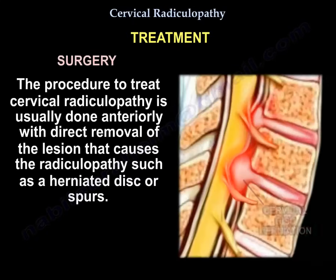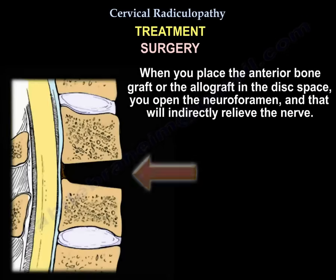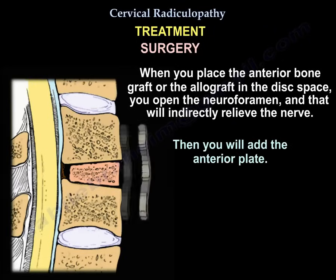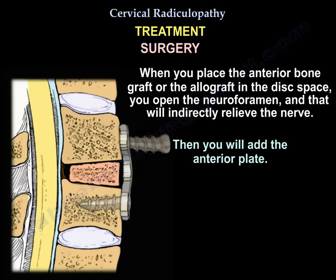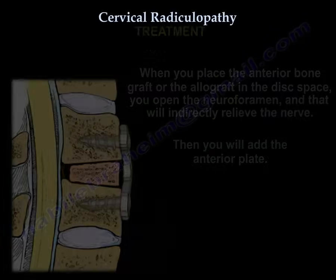The procedure to treat cervical radiculopathy is usually done anteriorly, with direct removal of the lesion causing the radiculopathy, such as a herniated disc or osteophytes. When you place an anterior bone graft or allograft in the disc space, you open the neuroforamen and indirectly relieve the nerve. Then you add the anterior plate. Some surgeons prefer a posterior approach.